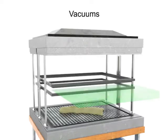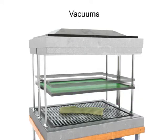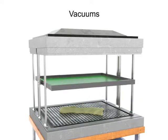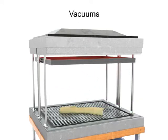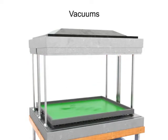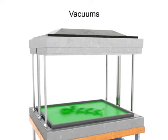In this application, a sheet of plastic is heated until it is malleable. Then a mold is applied and a vacuum is used to form the plastic to the mold.